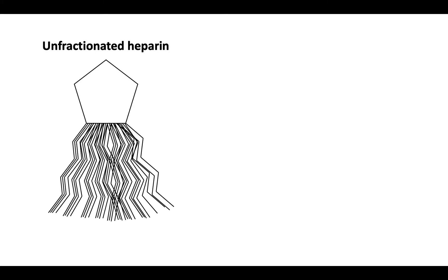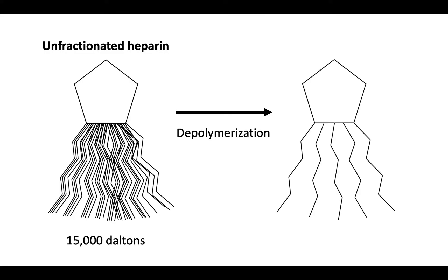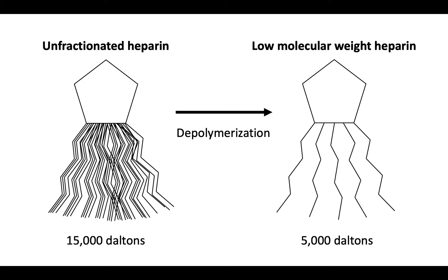Low molecular weight heparins are derived from heparin. Unfractionated heparin has a pentasaccharide chain and a long tail of different-length polysaccharides, with a high molecular weight of about 15,000 daltons. To make low molecular weight heparin, unfractionated heparin is subjected to depolymerization, yielding a product with a mean molecular weight of approximately 4,000 to 5,000 daltons — thus, appropriately named low molecular weight heparin.